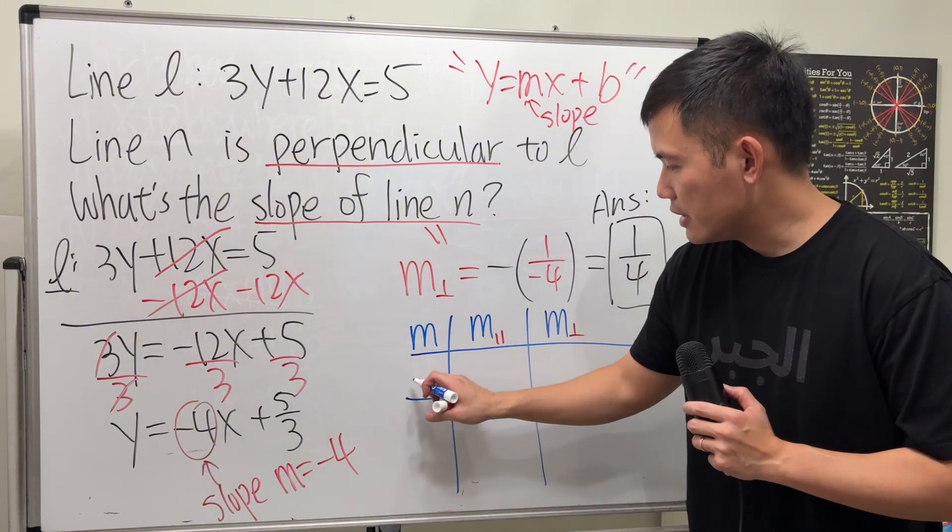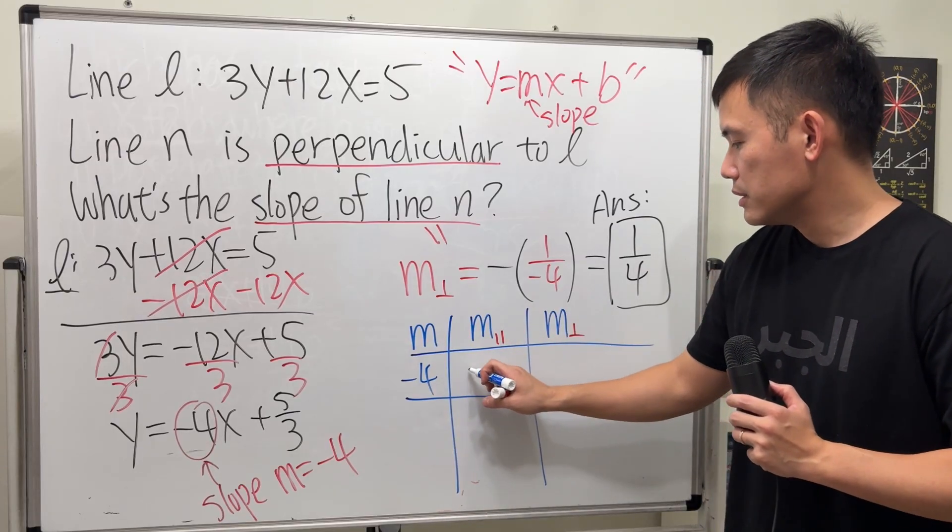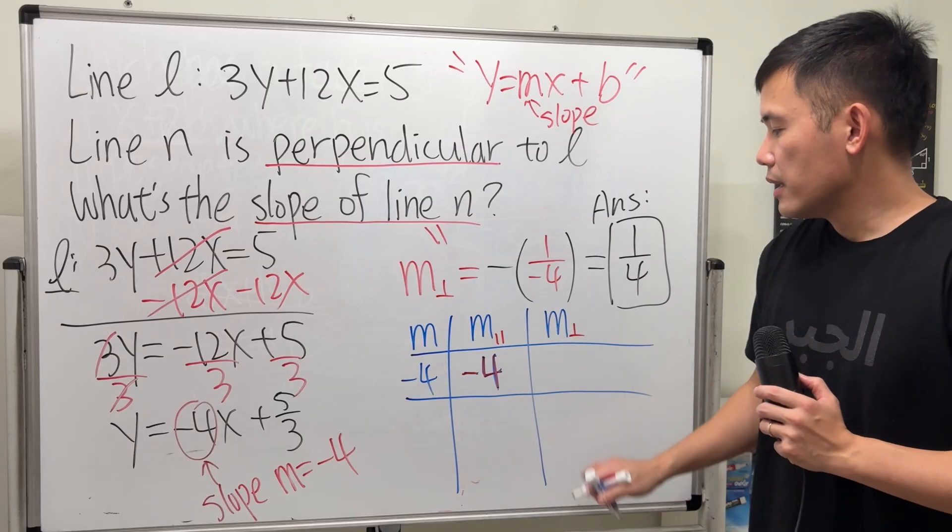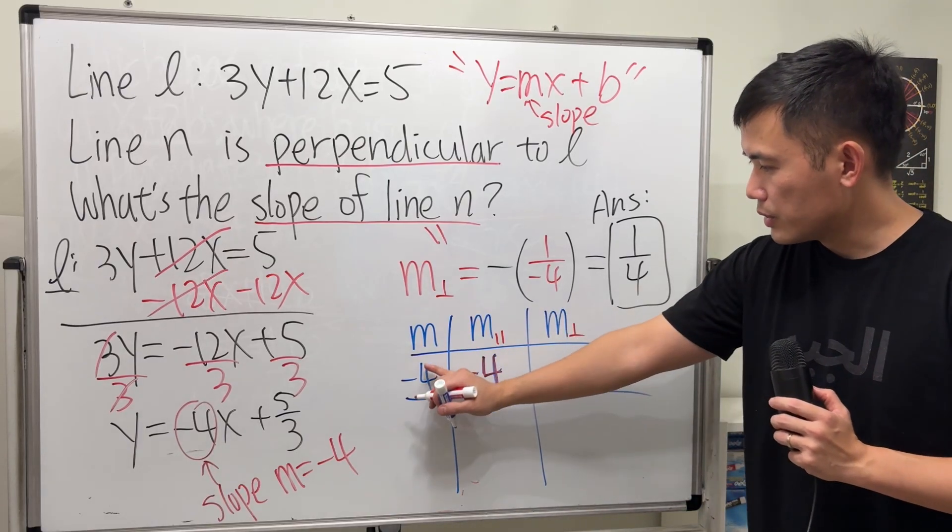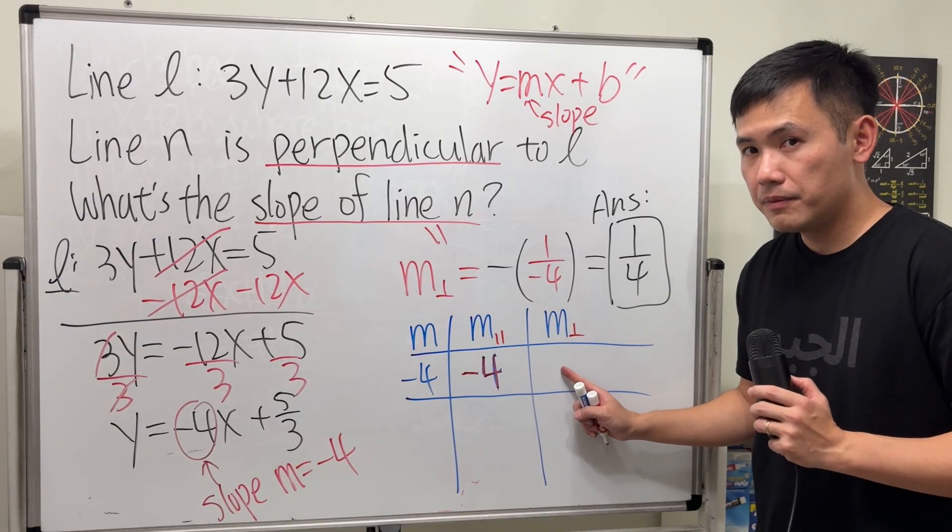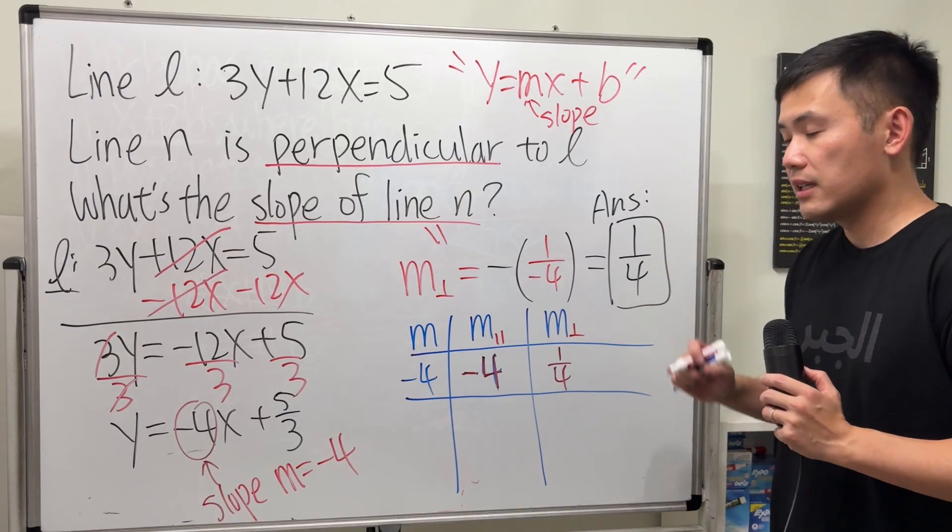Okay. If M is negative 4, parallel lines have the same slope. This right here will also be negative 4. Slope of a perpendicular line to the original. Opposite sign. This is negative, so this will be positive. And then do the reciprocal. So, positive 1 over 4. And that's exactly what we did.